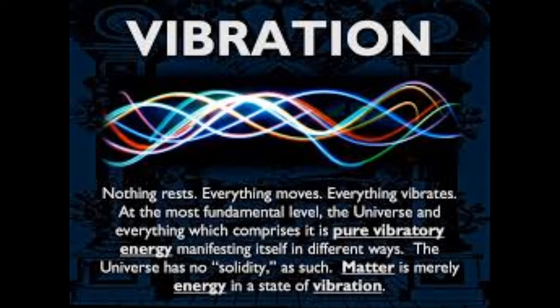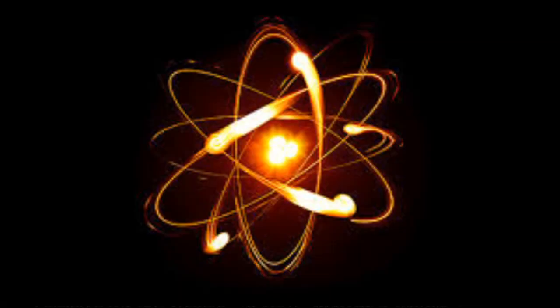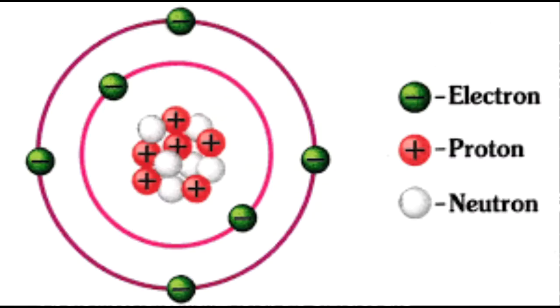We're going to discuss a couple of experiments that verify that. First I want to take a look at the atom. The atom is made of protons, neutrons, and electrons — positive particles, negative particles, and neutral particles. These particles move and work in a very similar way. They appear to rotate and to move in a very similar way that the rest of the universe does.